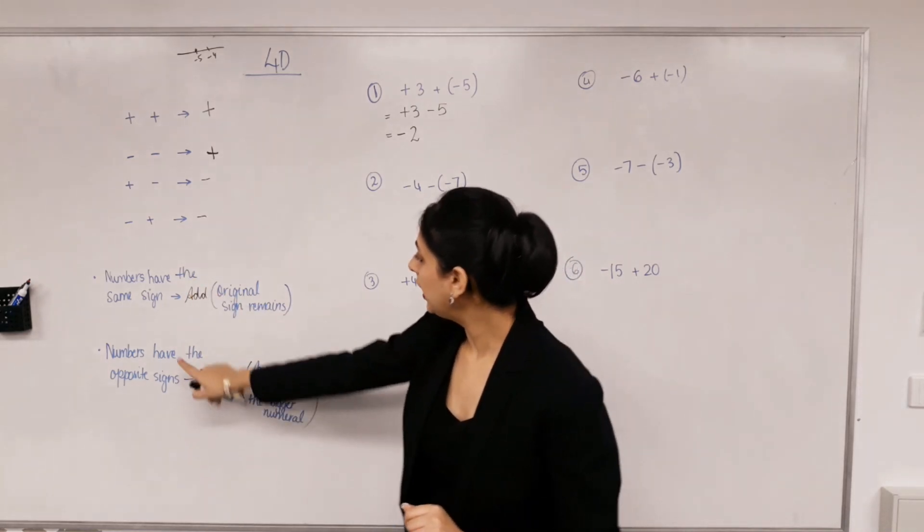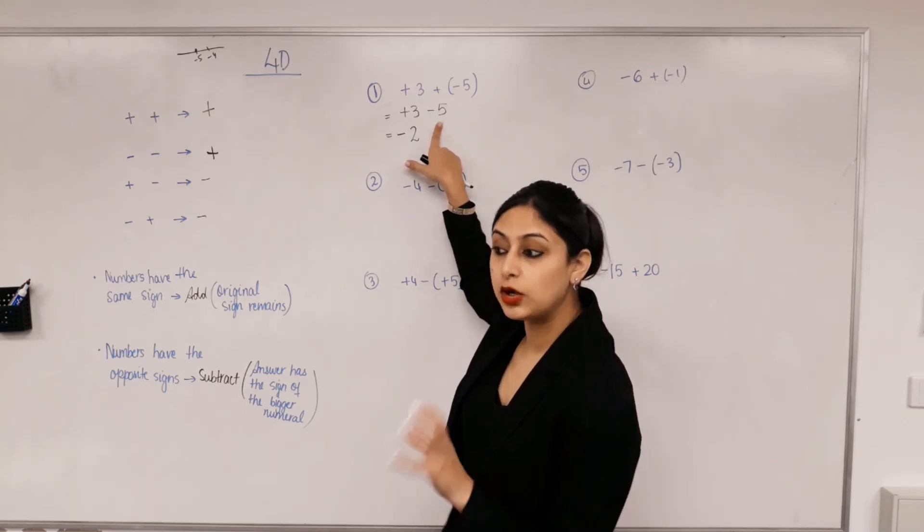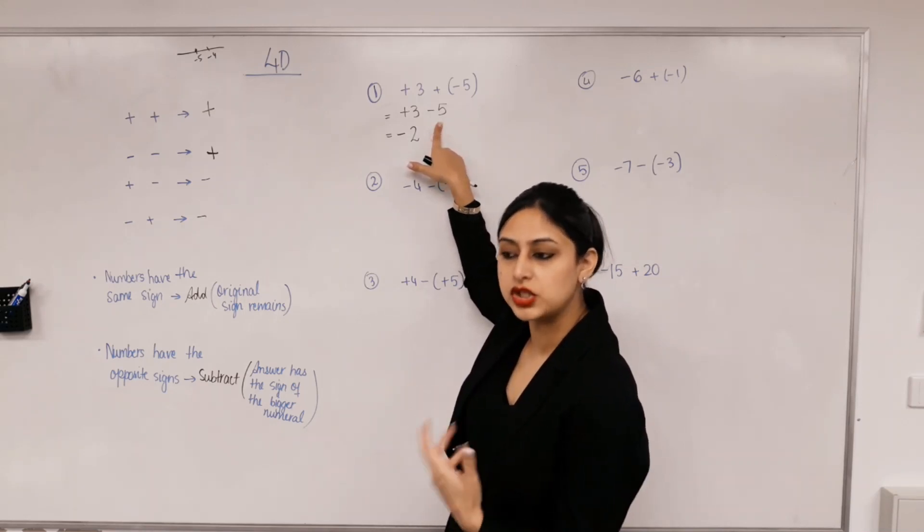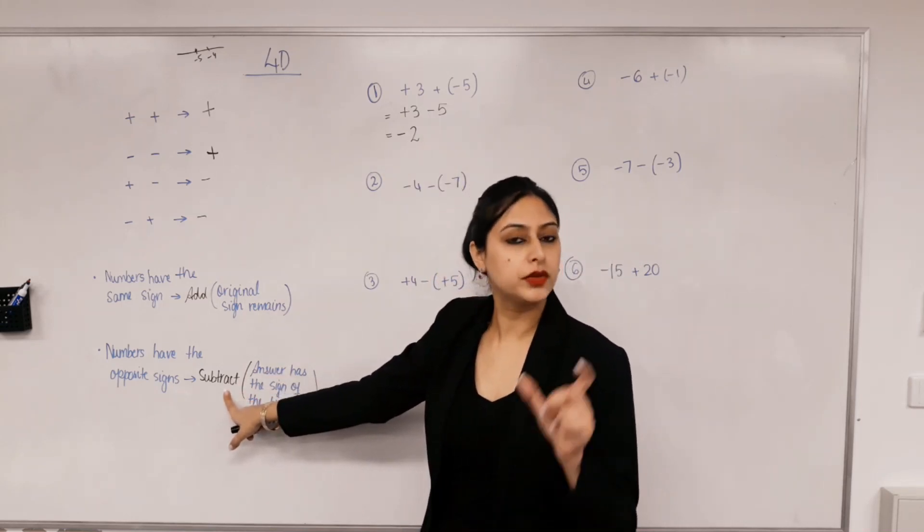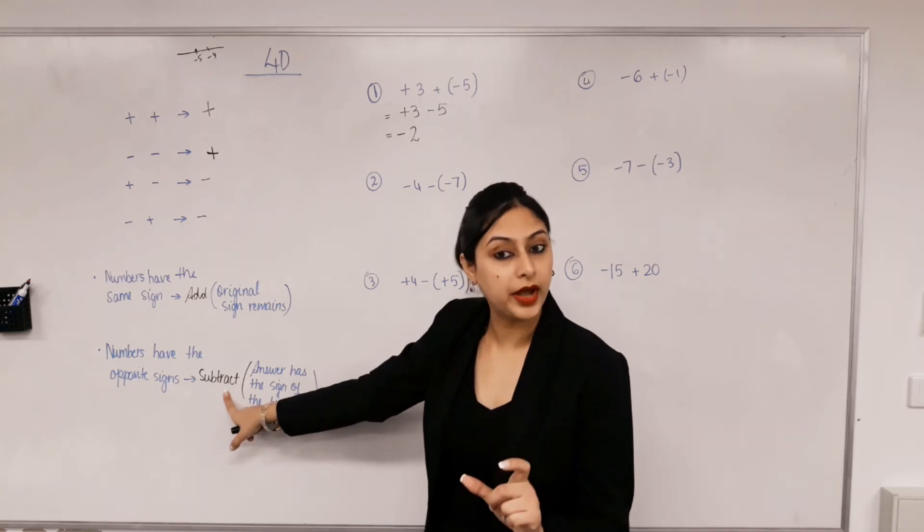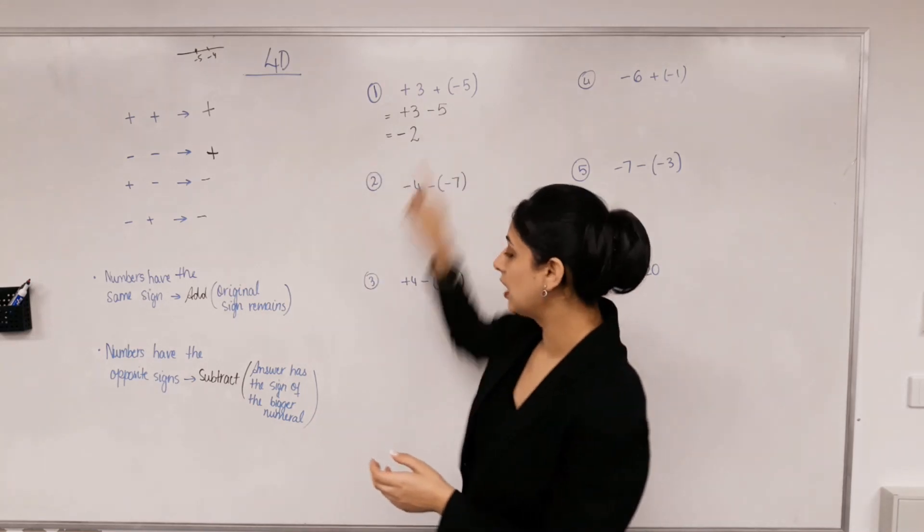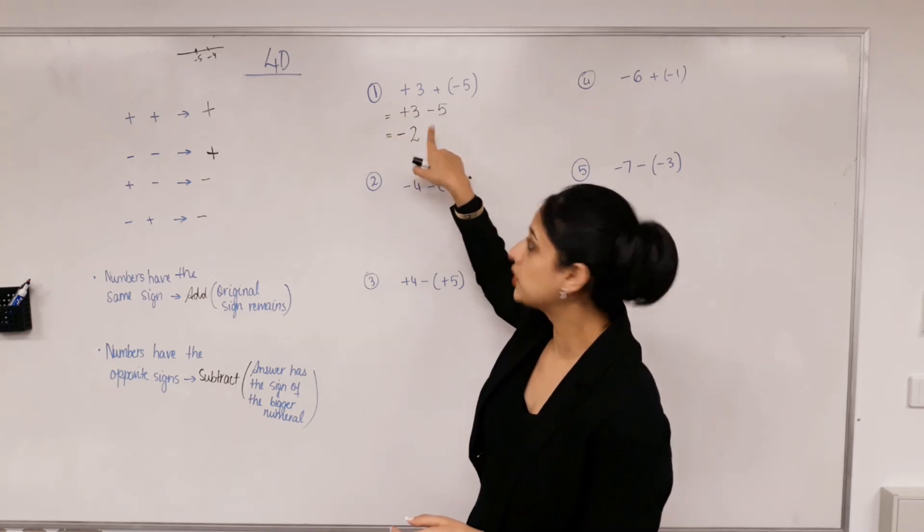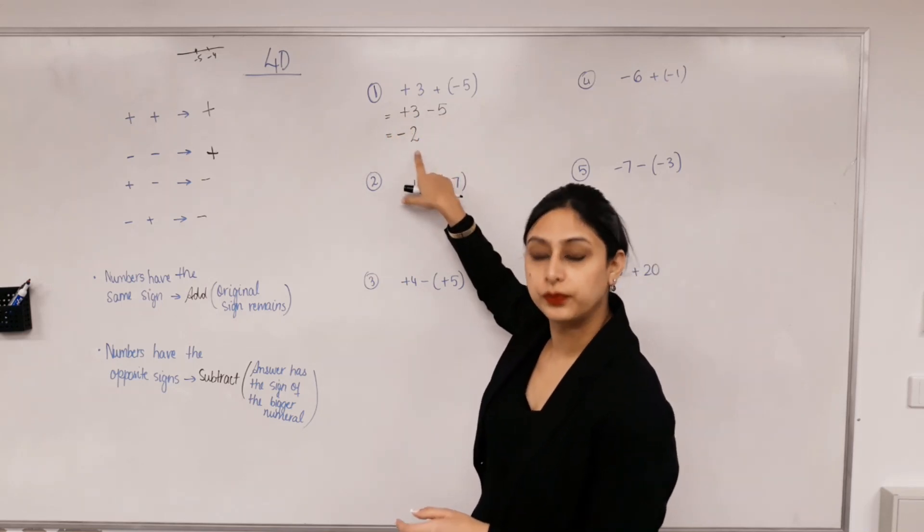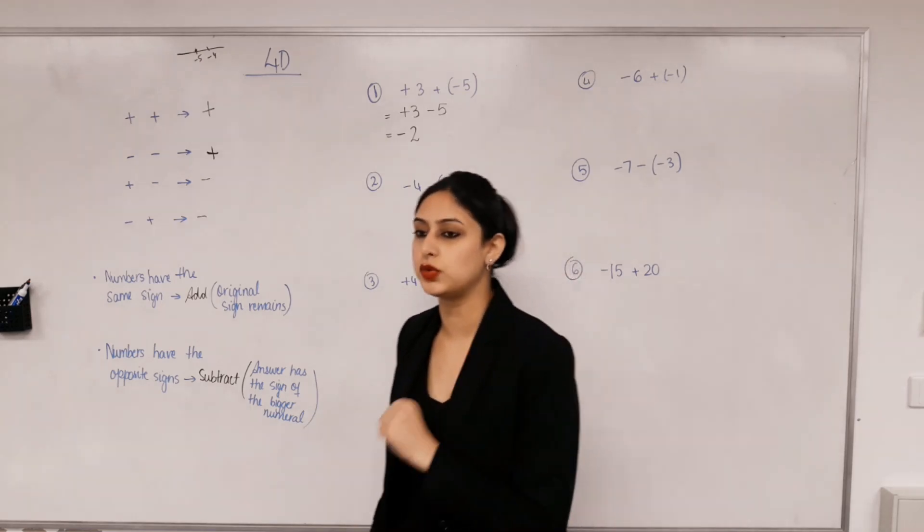If the numbers have the opposite signs, because they're on the different sides of the team, one's bad, one's good, won't we minus to see how much is more? So you subtract them. So if the numbers are opposite sides you subtract them because they belong to different teams. So which team will win? The negative one in this case. So the answer has the sign of the bigger numeral. So five is more than three. So you're minusing five from three. So the negatives will win.